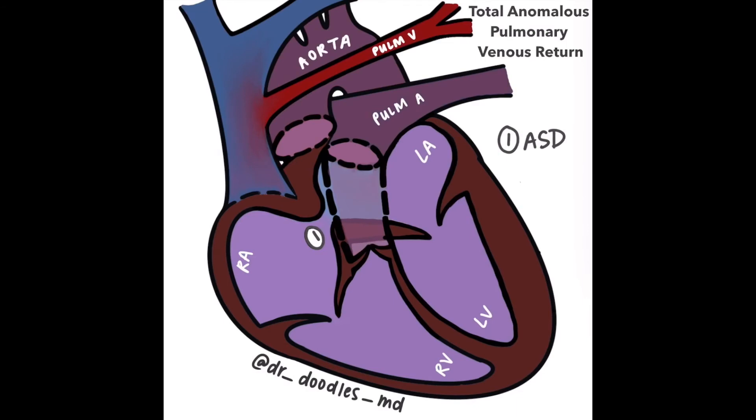Typically, a pulmonary systemic connection is present to allow input into the pulmonary circuit, shown here as an ASD.